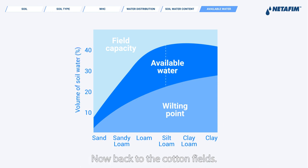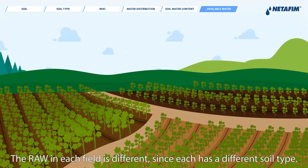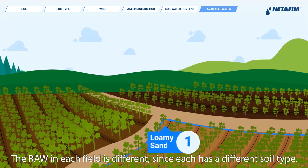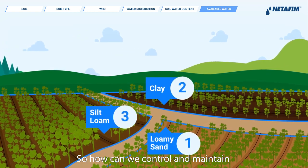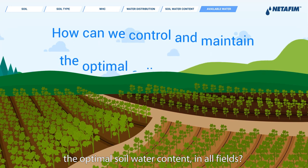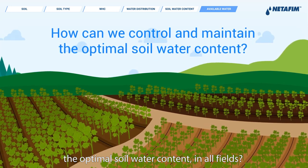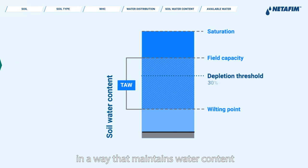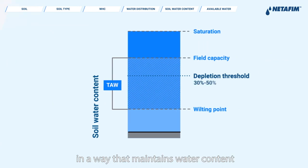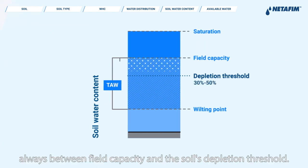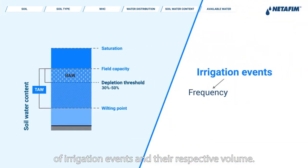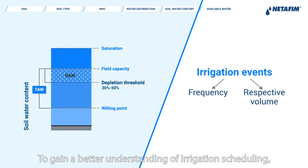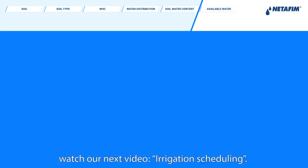Back to the cotton fields — the RAW in each field is different, since each has a different soil type. So how can we control and maintain the optimal soil water content in all fields? We can achieve this by applying water in a way that maintains water content always between field capacity and the soil's depletion threshold. This will be determined by the frequency of irrigation events and their respective volume. To gain a better understanding of irrigation scheduling, watch our next video: Irrigation Scheduling. Thanks for watching.